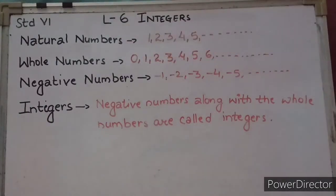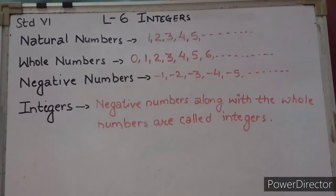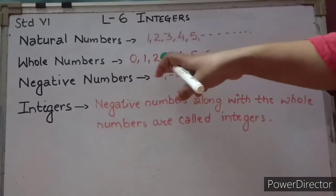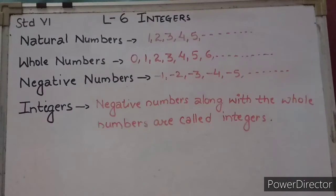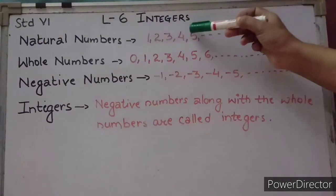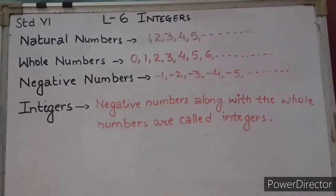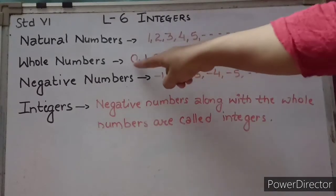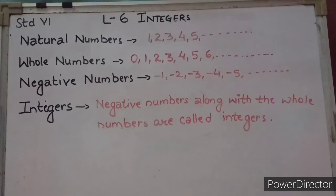Before that we will recall our numbers. First one is natural numbers. We have already discussed these things; once again we will discuss. Natural numbers are the numbers 1, 2, 3, 4, 5 and so on. Natural numbers are infinitely many. When natural numbers are along with 0, they become whole numbers. Natural numbers plus 0 are called whole numbers.